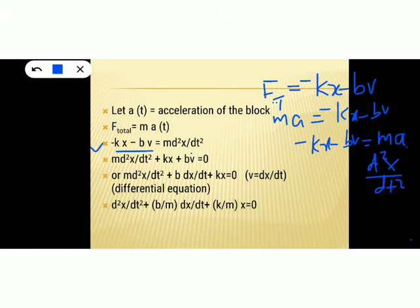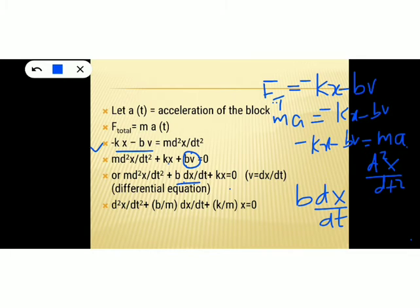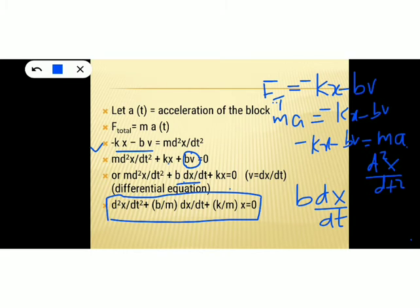Writing velocity v as dx/dt, we get: m·d²x/dt² + b·(dx/dt) + kx = 0. This is a differential equation. Dividing throughout by m: d²x/dt² + (b/m)·(dx/dt) + (k/m)·x = 0. This is the differential equation for the damping case. In the absence of damping the equation would simply be d²x/dt² + (k/m)·x = 0.